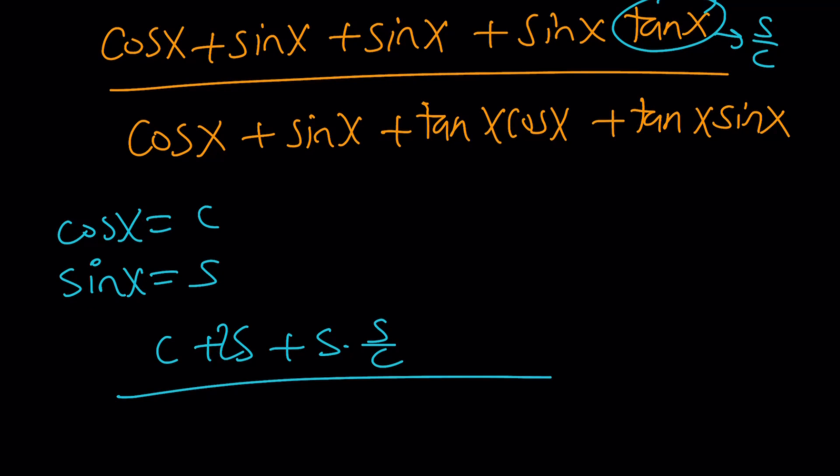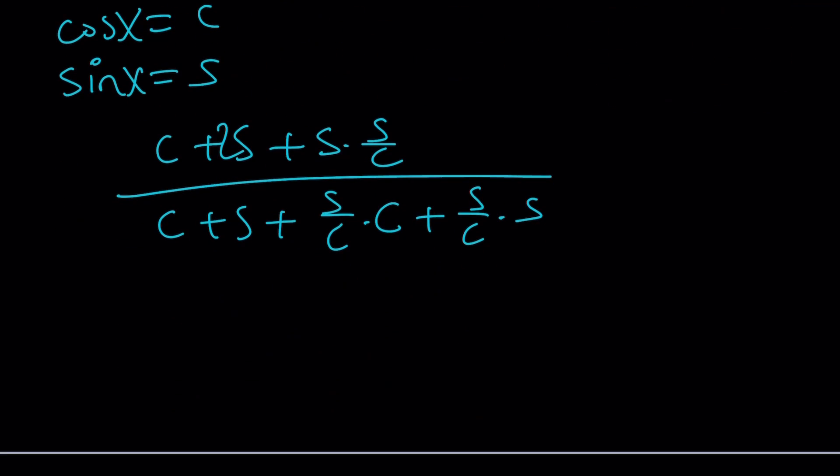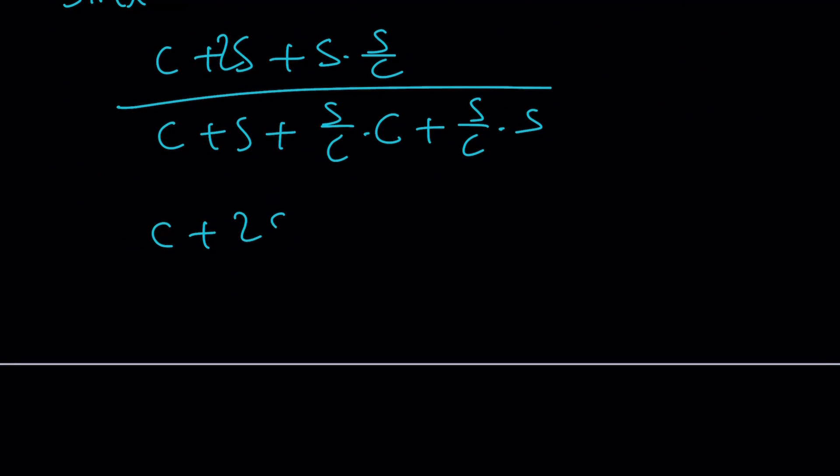Divided by c plus s plus, this is s over c times c, and this is s over c times s. Now let's go ahead and simplify this a little bit more. C plus 2s plus s squared over c, divided by c plus s plus, those c's cancel out here and then it ends up with c. So that becomes 2c. It's like 2c or not 2c. And then plus s squared over c. Hmm. That's interesting.